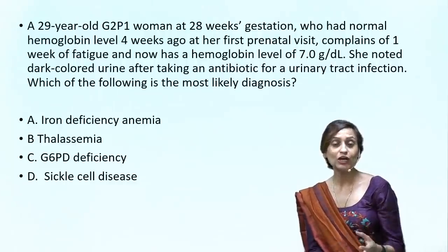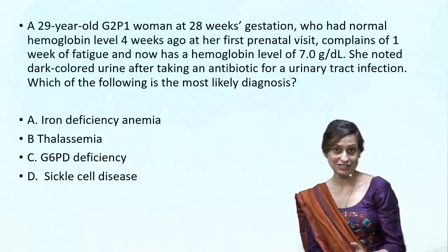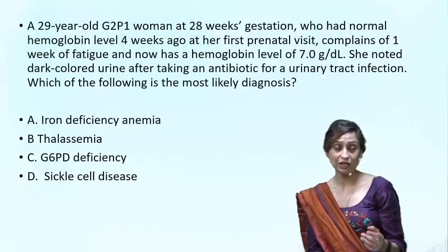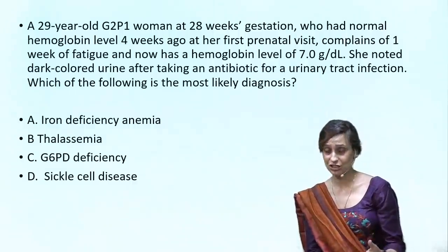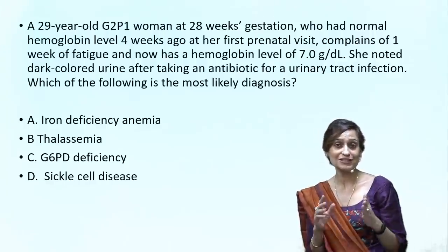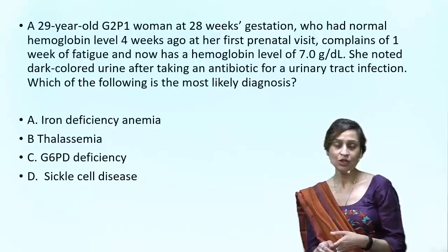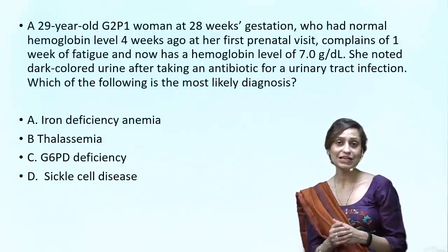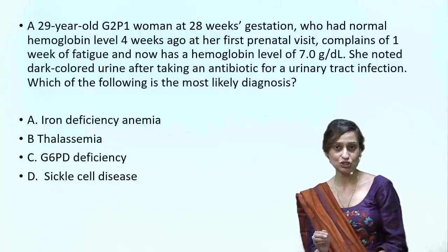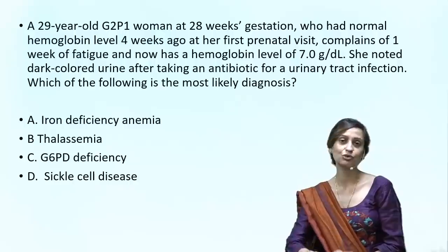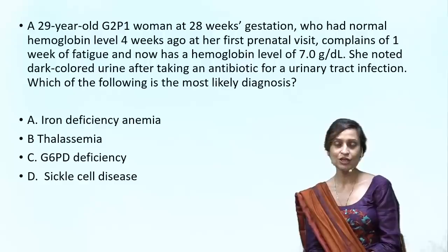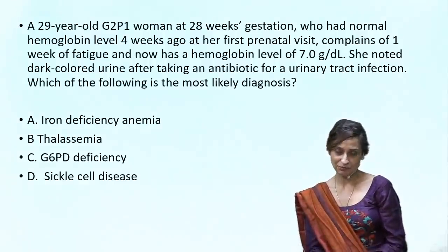Now let's relate this to our patient. She had a urinary tract infection. At her first visit around 24 weeks, a urine routine microscopy would have been done and we found she had a UTI. She could even have had asymptomatic bacteriuria, which is definitely treated in pregnancy — if untreated, 30 to 40 percent of these patients will eventually develop symptomatic UTI, and up to 25 percent can develop pyelonephritis.